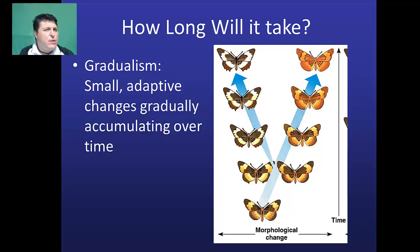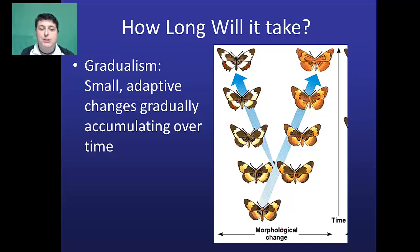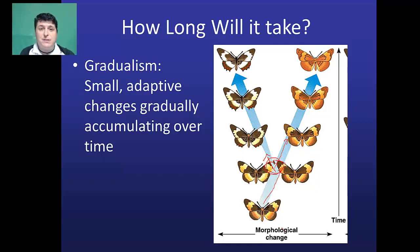So how long does speciation take? One idea is that it takes a really long time, known as gradualism. With gradualism, small changes that have adaptive value build up over time until a new species forms. One criticism of this viewpoint is that we should then see evidence of these intermediate changes in the fossil record — but unfortunately, there are large gaps in the fossil record.